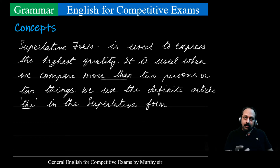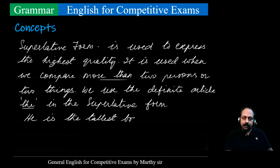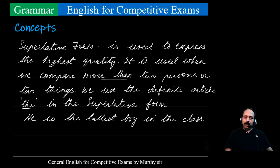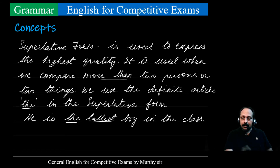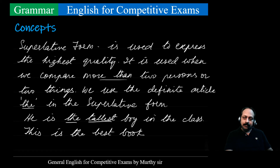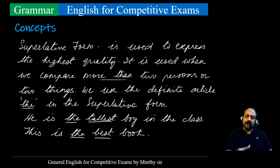For example: tall, taller, tallest. 'He is the tallest boy in the class' — in the class there are many students, more than two, so we use the superlative form 'tallest,' and the definite article 'the.' Similarly, good, better, best: 'This is the best book' — comparing more than two books, superlative form 'best' with the definite article 'the.'